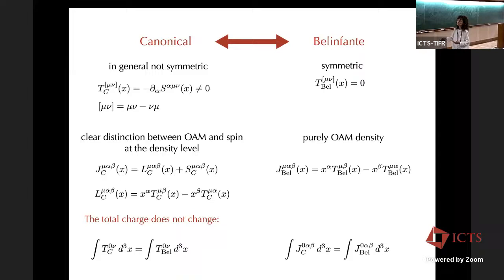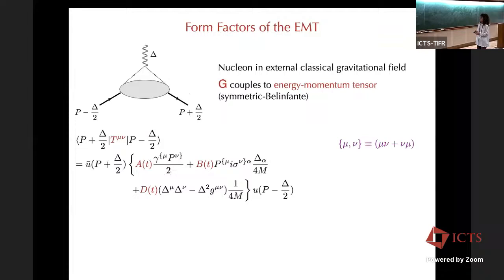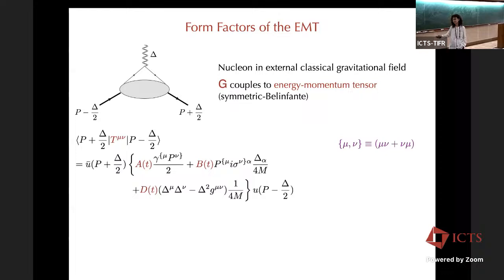Now we take the matrix element of the energy-momentum tensor between two states with different momentum. This matrix element can be parameterized in terms of form factors — exactly the same as you do with the electromagnetic current. We are doing the same for the energy-momentum tensor, which is the current describing the coupling of a graviton field with the nucleus. Sometimes you find a different parameterization, but the two are just related by the Gordon identity, which is always true for on-shell particles.